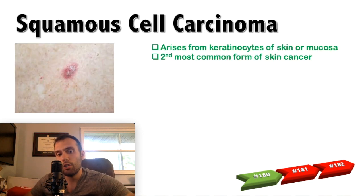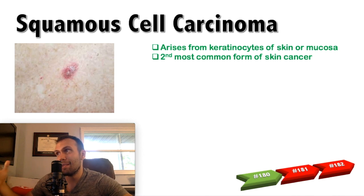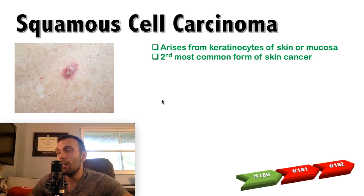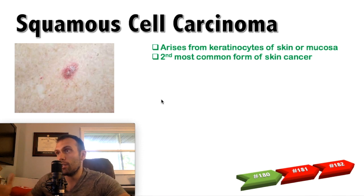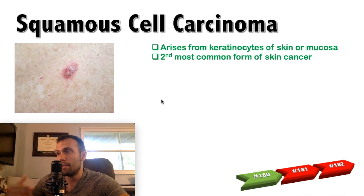Basal cell carcinoma originates from cells in the basal layer of the epidermis. Squamous cell carcinoma originates from keratinocytes of the skin or mucosa, and it's the second most common form of skin cancer behind basal cell carcinoma. Looking at a gross image, there really isn't anything that completely jumps out to identify squamous cell carcinoma — I'm not a dermatologist, and it's very difficult to differentiate grossly. Usually you need some form of biopsy — shave, excisional, or punch — to really know what you're dealing with.